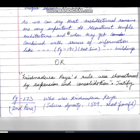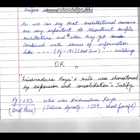Question number 23: 'Krishnadevaraya's rule was characterized by expansion and consolidation — justify.' Since the question asks about Krishnadevaraya, the question itself gives us the introduction of who he was.